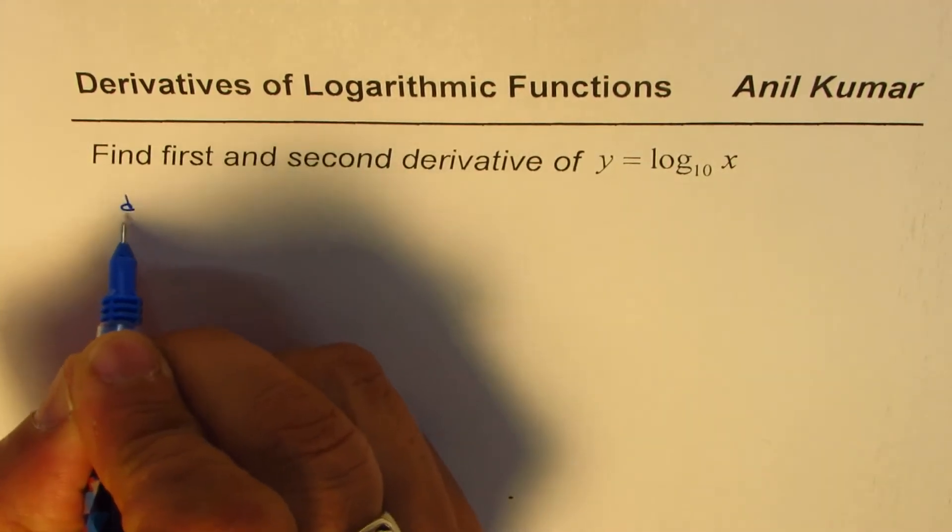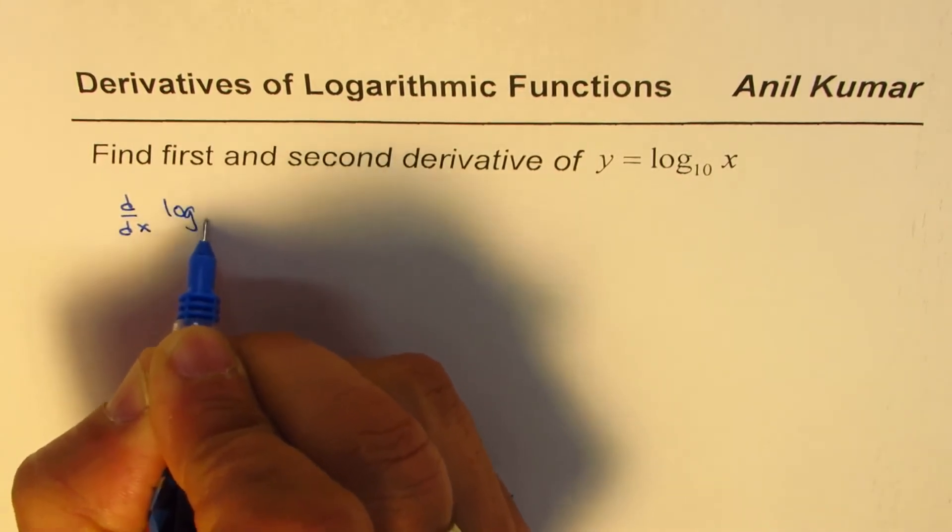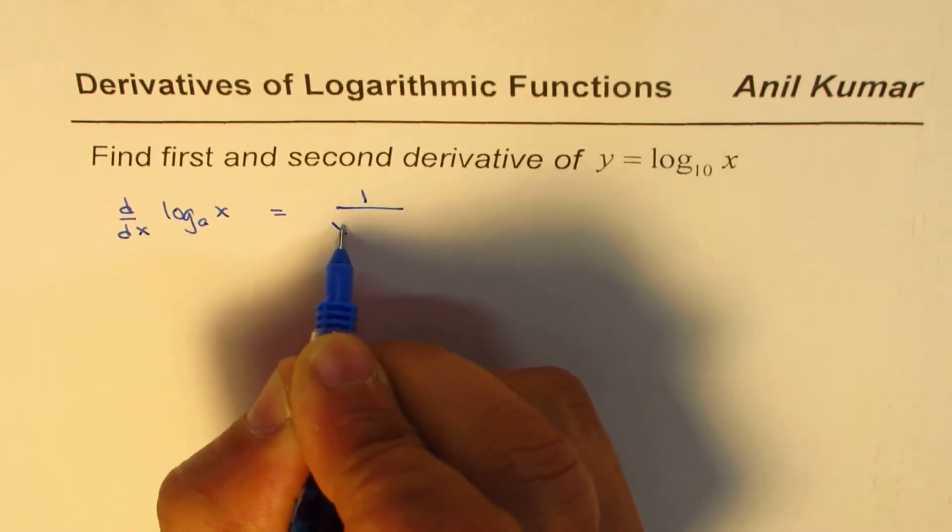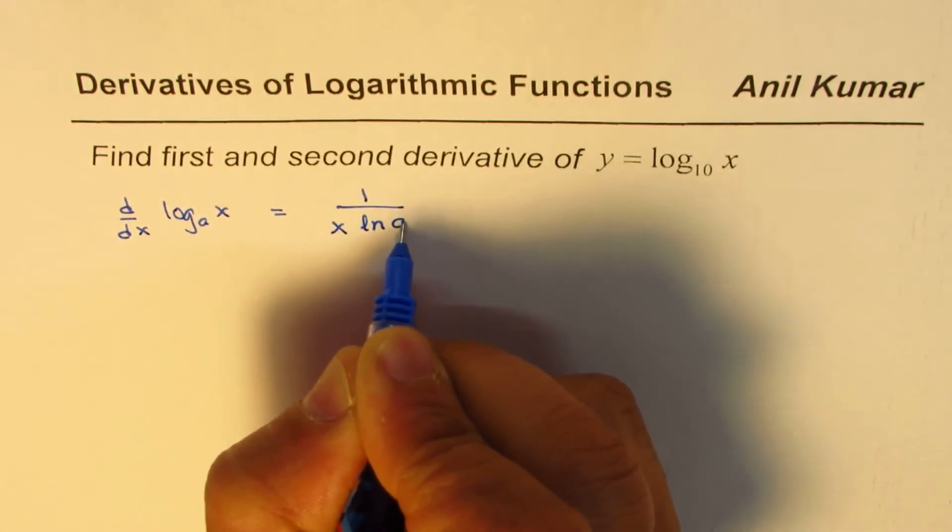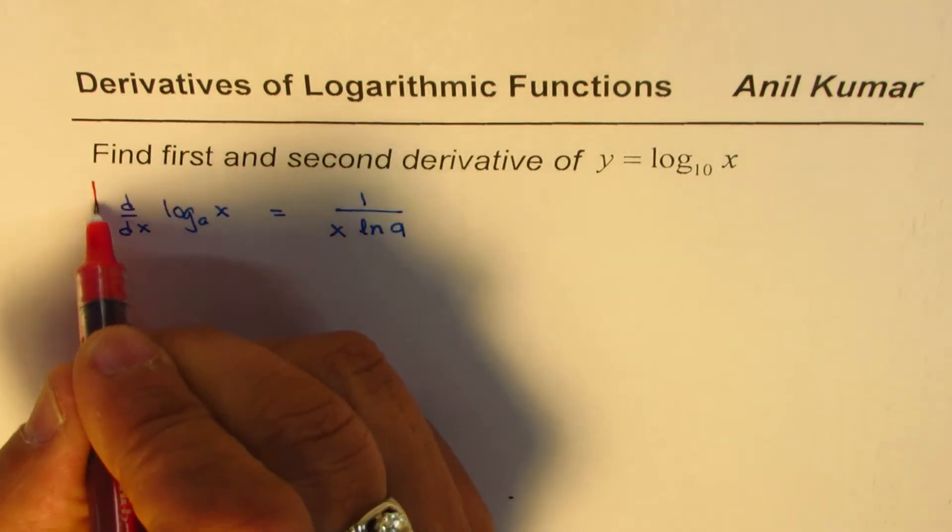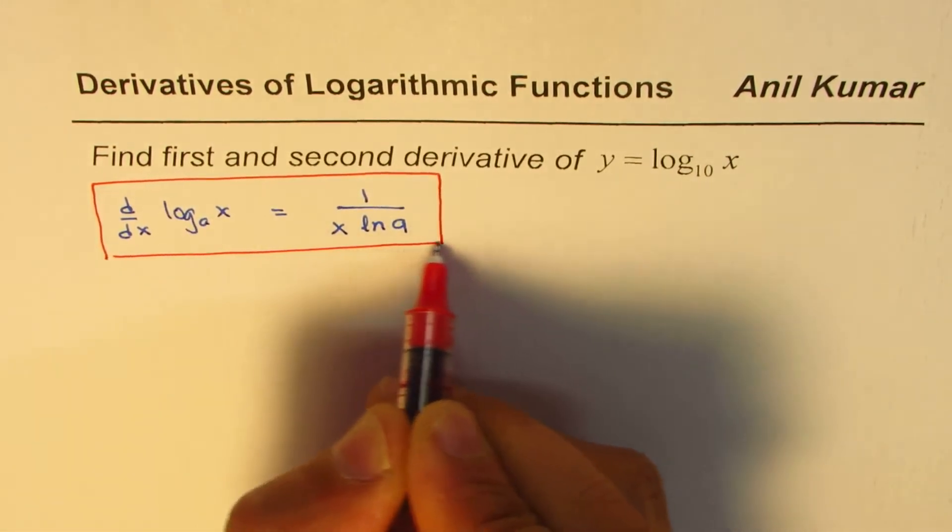The formula here is: if you want to find the derivative of log base a of x, it is 1 over x ln a. So that is the formula which you need to use to find this derivative and second derivative. We'll apply this formula to find the derivative.